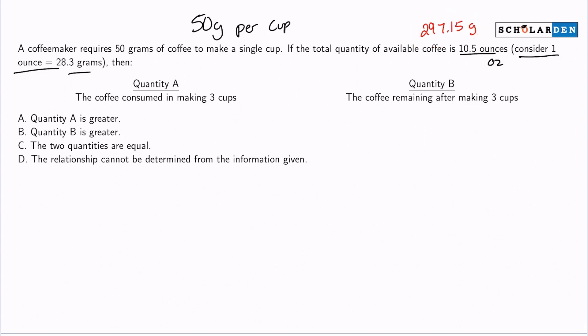And so now let's go ahead and compare quantity A and quantity B. Let's compute them. Quantity A, the coffee consumed in making 3 cups. So the coffee consumed in making 3 cups, if it's 50 grams per cup, then that's 50 times 3, or 150 grams for 3 cups.